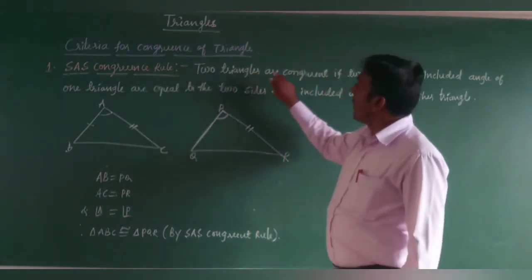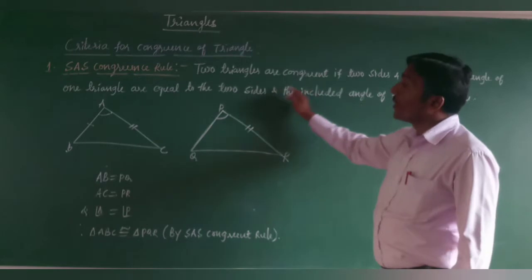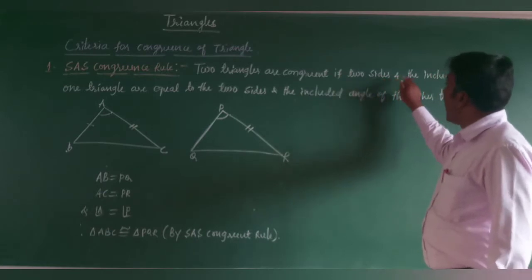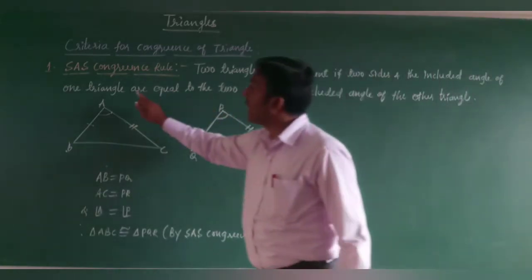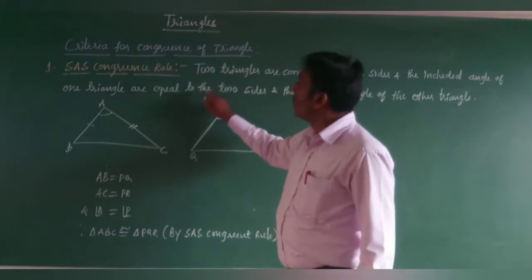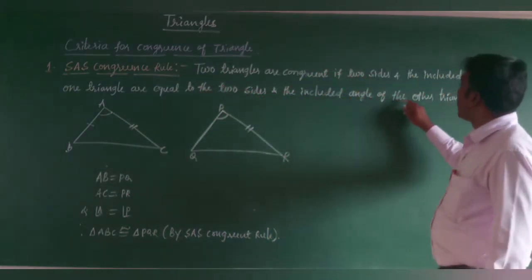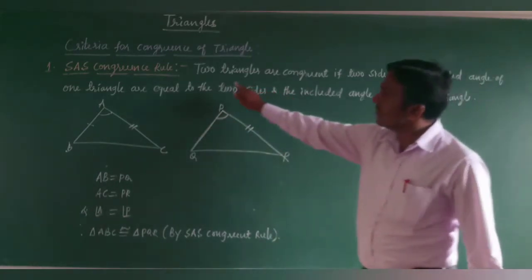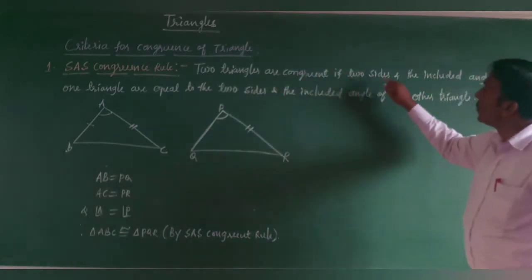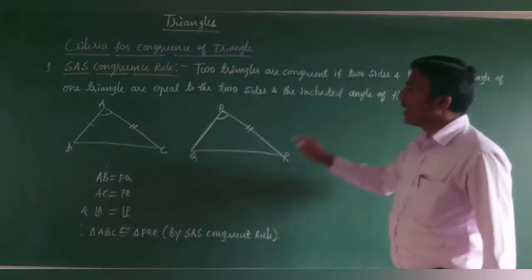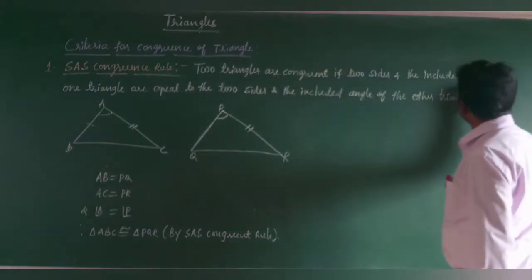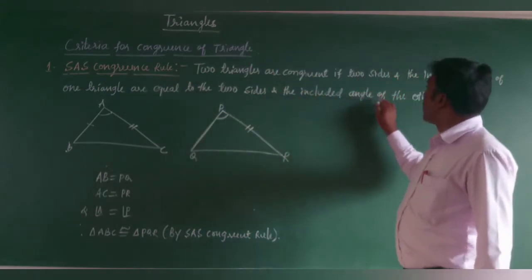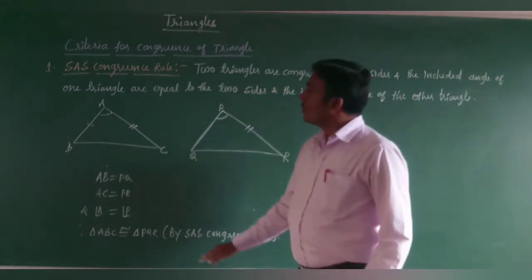The SAS congruence rule states that two triangles are congruent if two sides and the included angle of one triangle are equal to the two sides and the included angle of the other triangle.